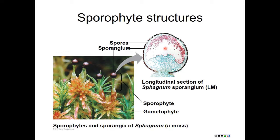Here's an example of a moss — a sphagnum moss. The sporophyte is just this stalk with a ball on top, and that ball is the sporangium. It is made of diploid tissue, and inside are cells that will undergo meiosis to become spores. Once meiosis has occurred, we have many, many spores. These spores can germinate and grow by mitosis to produce the multicellular gametophyte.